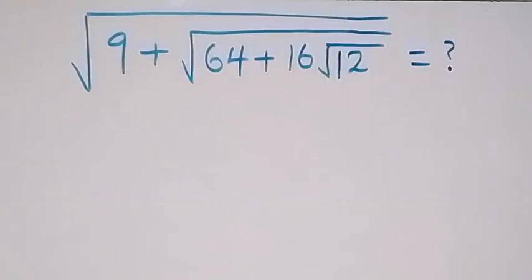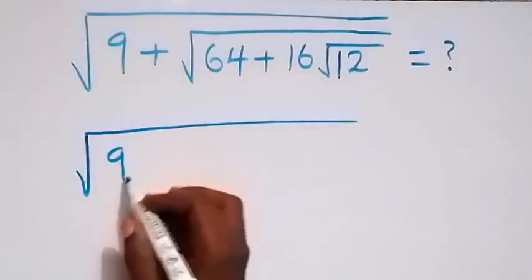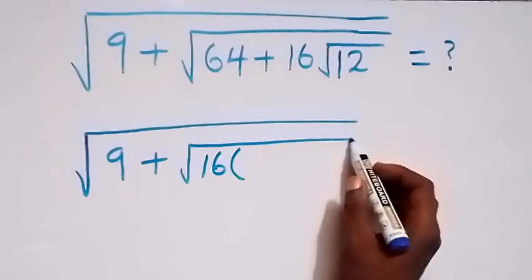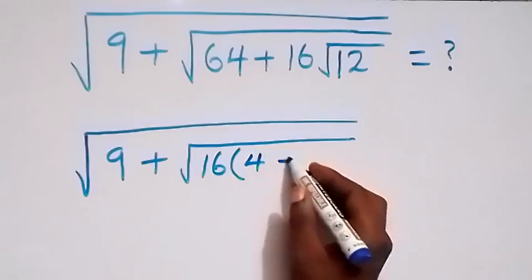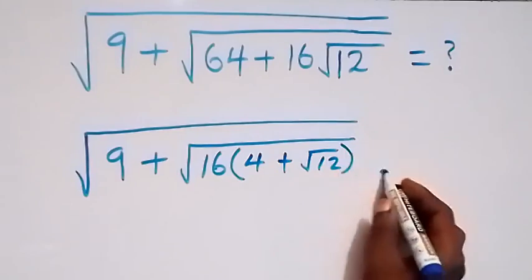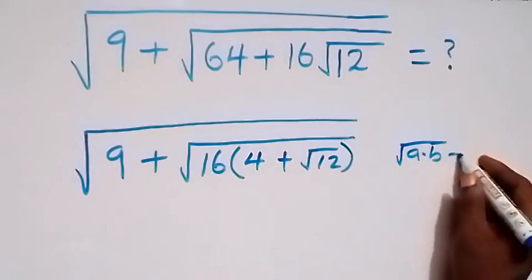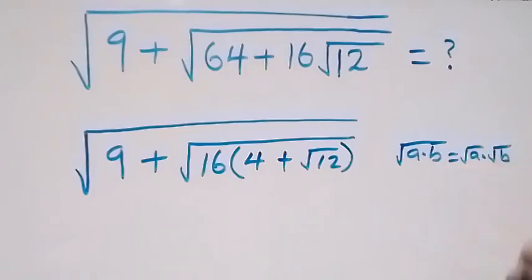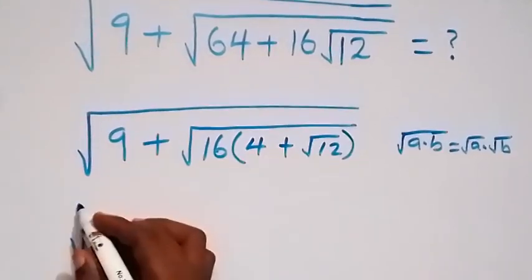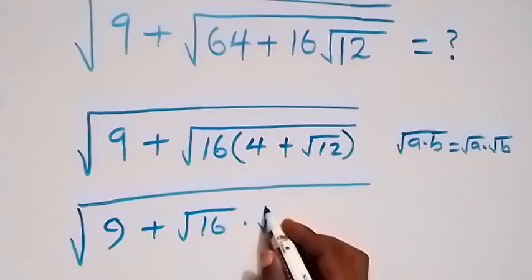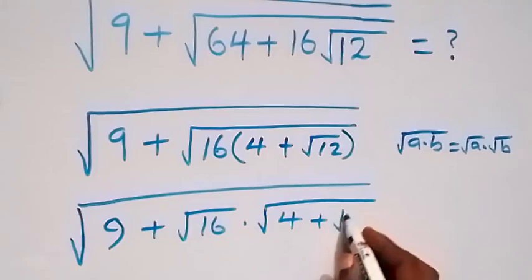Hello, you are welcome here. How to solve this square root problem. From here, what we have we can write as square root of 9 plus square root of — here 16 is common, we can bring it out as 16 into bracket. This will remain 4, that's 4 plus, this will remain with 12. Then we have root a times root b, which can be written as root a times root b — we can separate that. This will give us square root of 9 plus square root of 16, then times square root of 4 plus root 12.